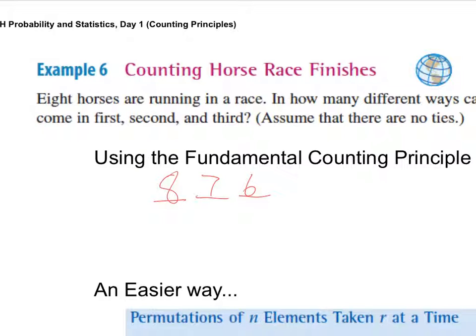So this kind of looks like a factorial, doesn't it? Eight times seven times six, whatever that is. 336. Now, like we said, this kind of looks like a factorial. What did it do? If I had an eight factorial here, what would I have to get rid of? The five, four, three, two, and one, right? So I'd have to divide by a five factorial.